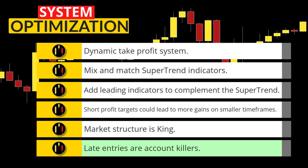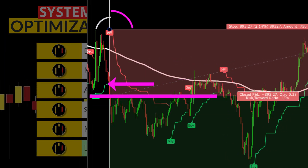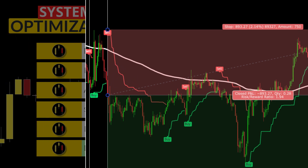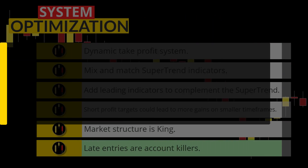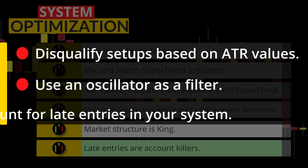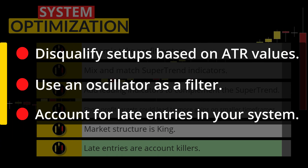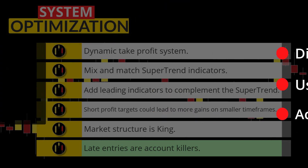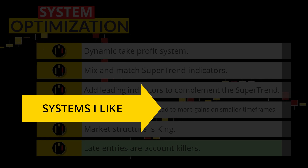In addition, I noticed during testing there were signals where the super trend ATR line was quite a distance away from the entry level. A couple of ways to filter out these late entries is to disqualify these setups based on ATR values or even the location of an oscillator like the stochastic. When you are designing a trading system you want to make sure you account for late entries that can cause losses. Check out this playlist for more profitable systems and have a great day because you deserve it.